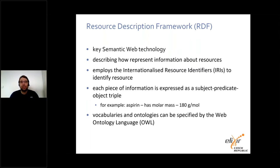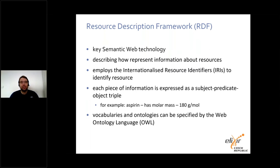The key semantic web technology is the Resource Description Framework, abbreviated as RDF. This framework defines how to represent information about resources, where a resource is an abstraction of some entity in the world. Each piece of information is expressed as a simple sentence in the form subject–predicate–object. Such a triple denotes that the subject is related to the object, and the kind of relation is denoted by the predicate. For example: aspirin has molar mass 180 grams per mole — here 'aspirin' is the subject, 'has molar mass' is the predicate, and '180 grams per mole' is the object.